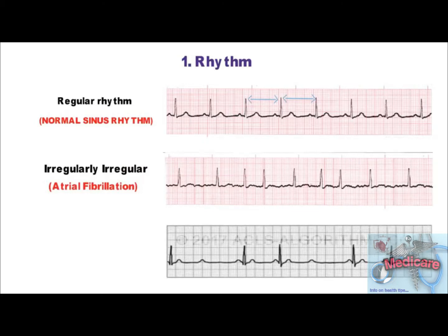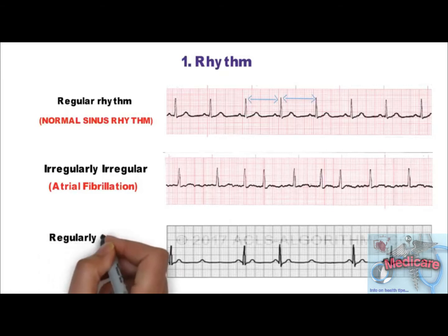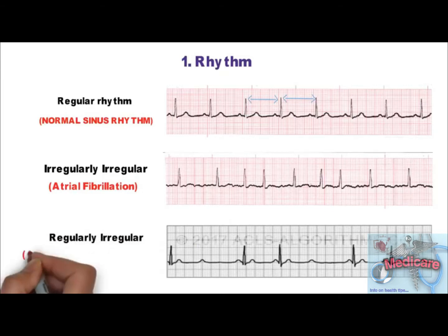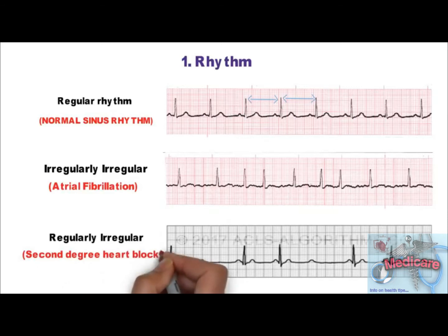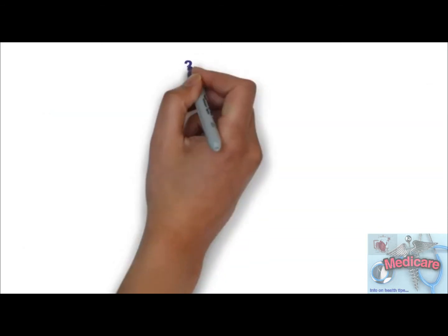Now look at this ECG: normal regular rate with a regular dropped beat. So the rhythm is regularly irregular, which is seen most commonly in second degree heart block type 2.